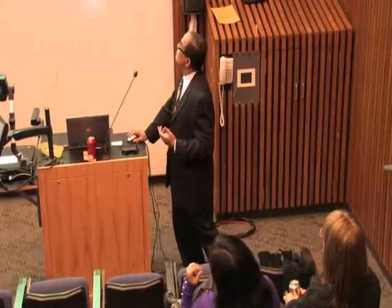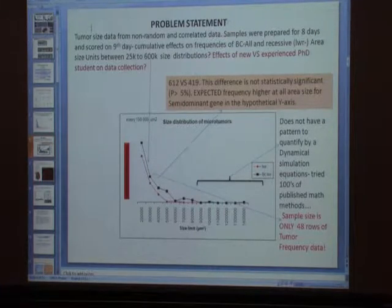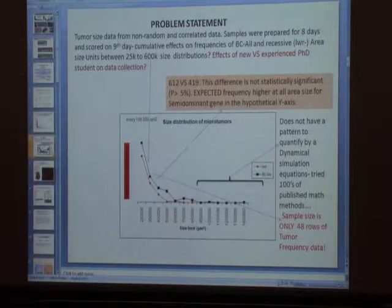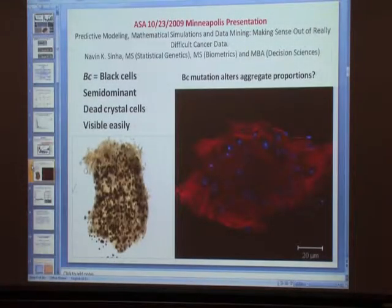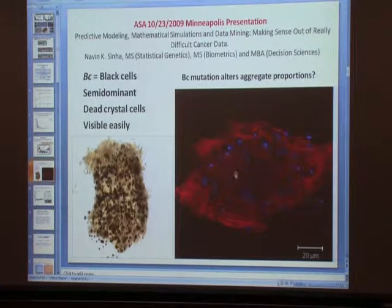We see that this effect was not significant, but this was always supposed to be at higher expectations. Now, black cells — this is a black cell, this is LWR — and as we can see, this is black and semi-dominant, they are visible very easily: dead crystal cells. These are some of the properties they have, and it takes time.